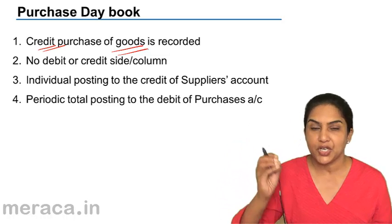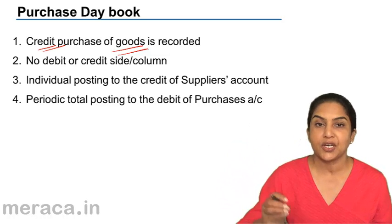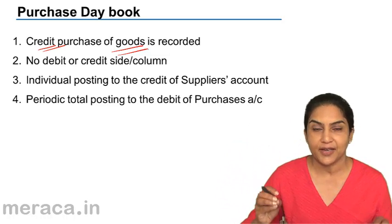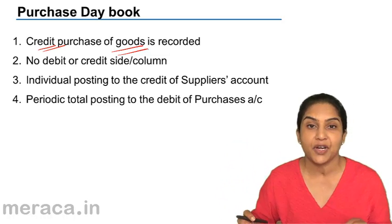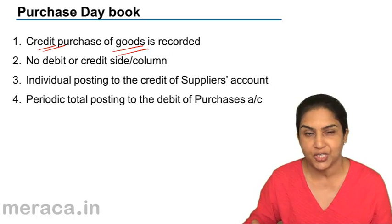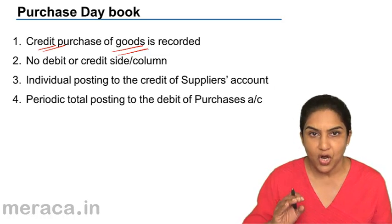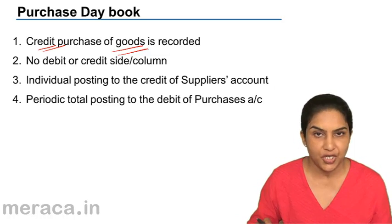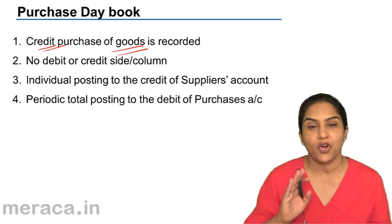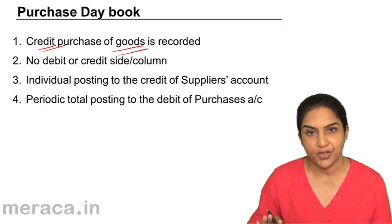If we purchase machinery on credit — a credit purchase of an item of machinery, that's an asset — it will not be recorded in the purchase day book.